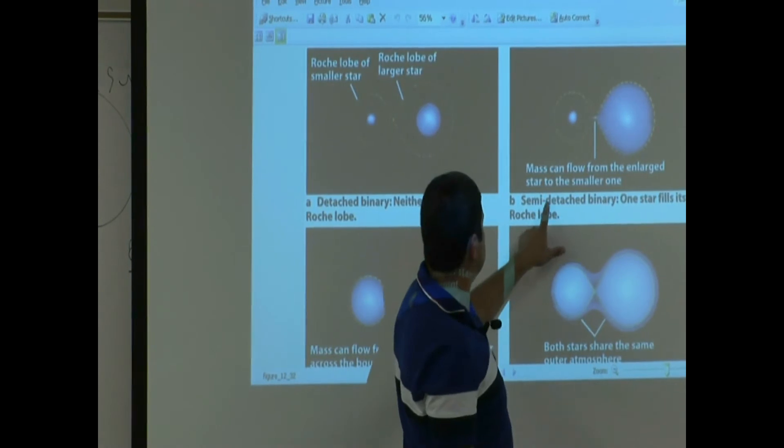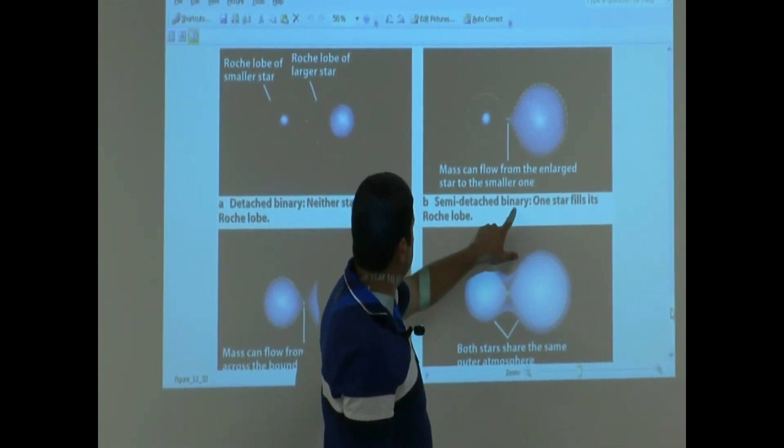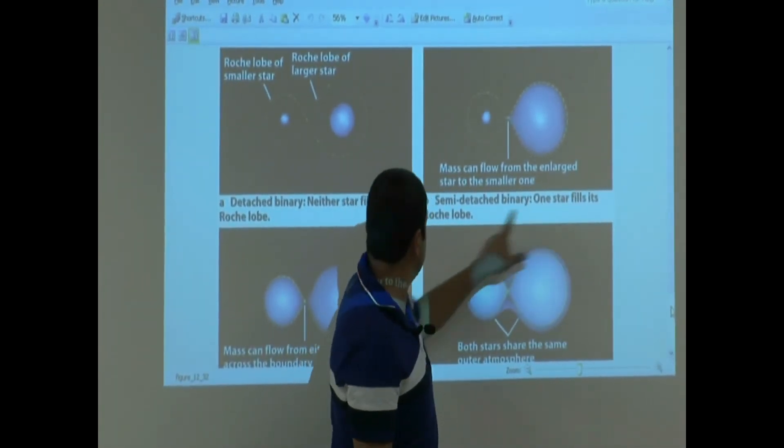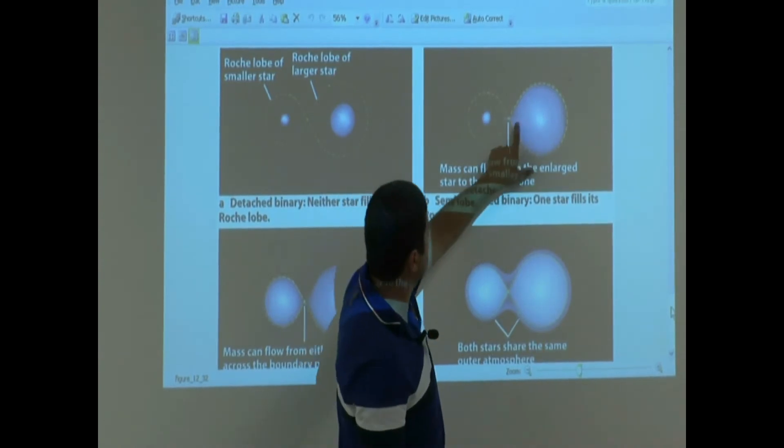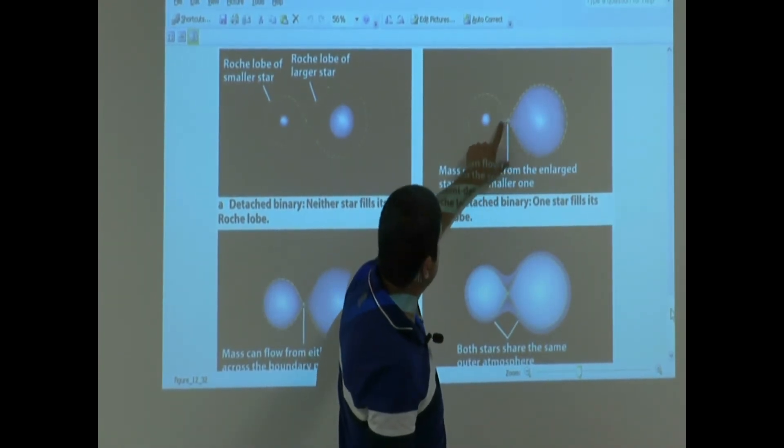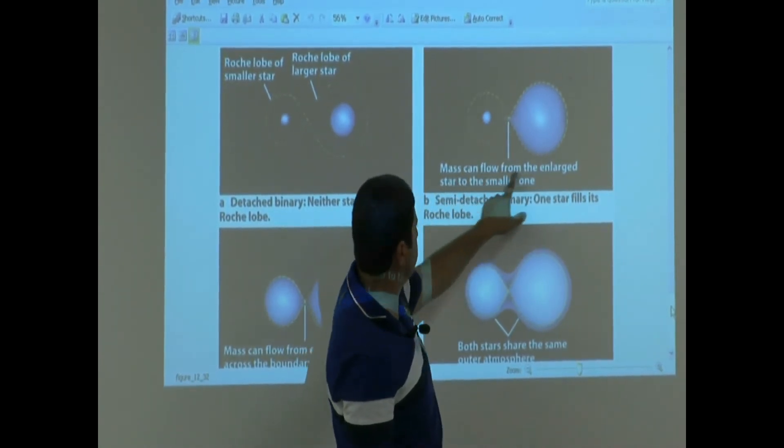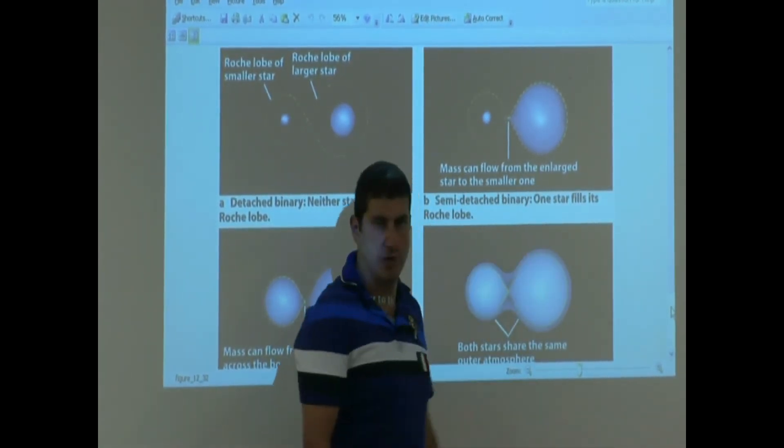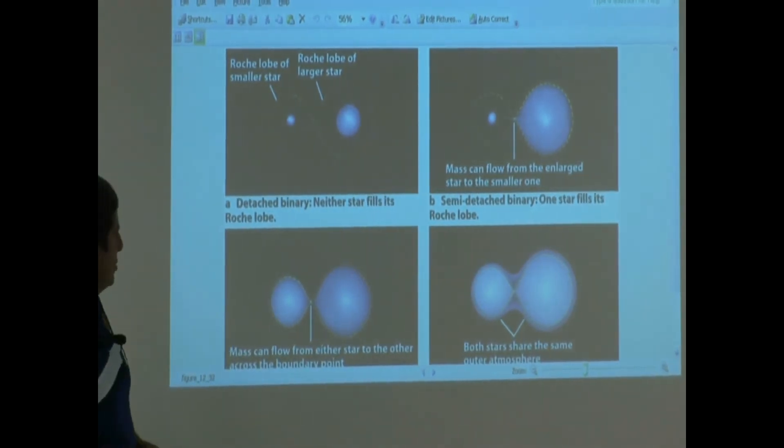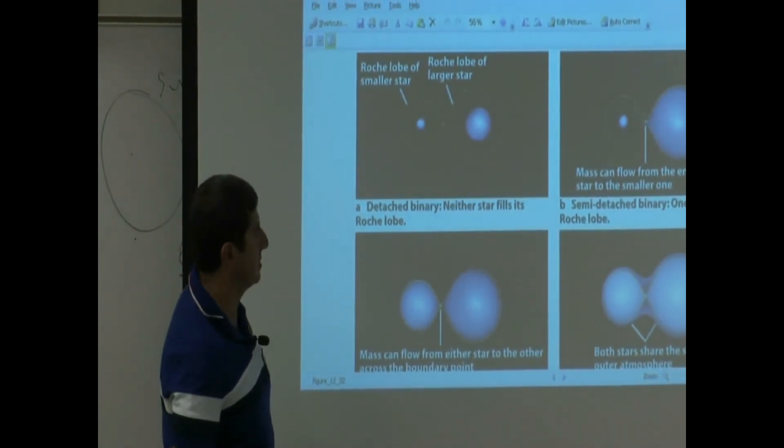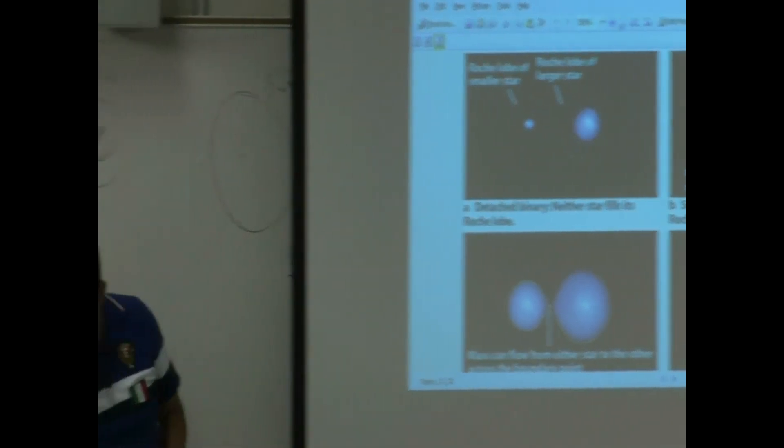B, semi-detached binary. One star fills its Roche lobe. You see here? It fills its Roche lobe. And you see here? It's already starting to transfer mass. Mass can flow from the enlarged star to the smaller one. So what is that known as? Semi-detached.